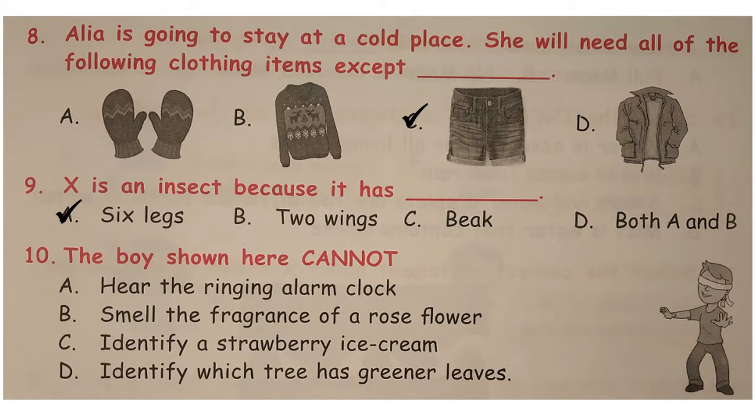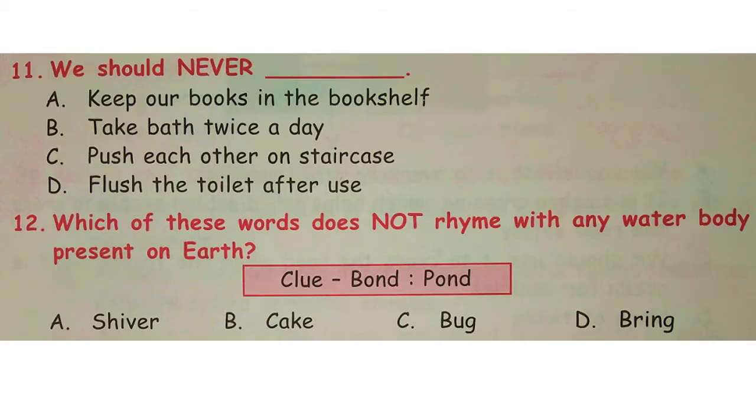Question number 10: the boy shown here cannot — please look at the options. The correct answer is option D. As the eyes of the boy are covered, he cannot identify the color of the leaves as given in option D.